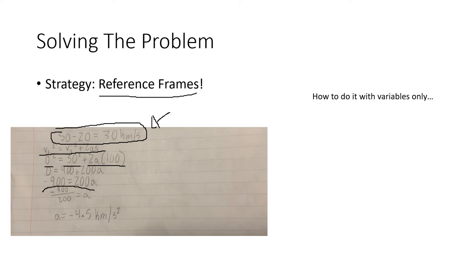Do a little bit of algebra here, and then get the final answer of acceleration equals minus 4.5 kilometers a second squared. So, the acceleration needs to have a magnitude that's larger than 4.5 kilometers a second squared.